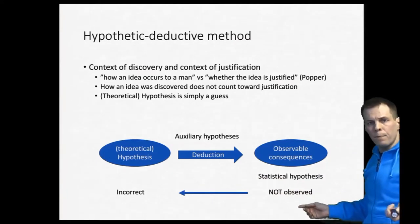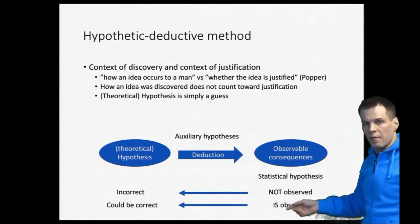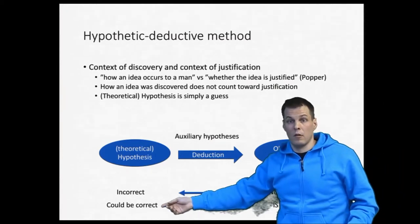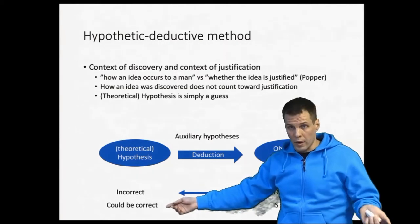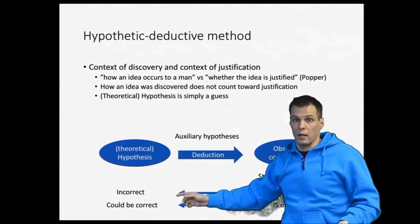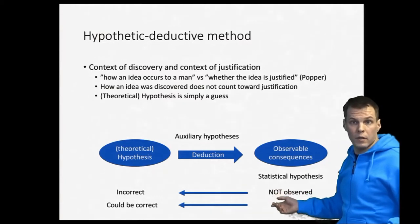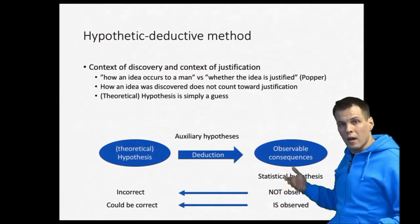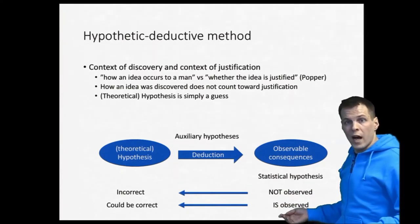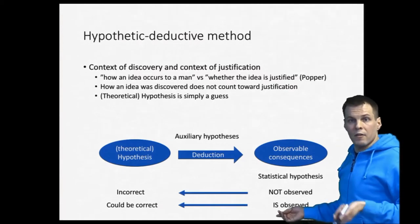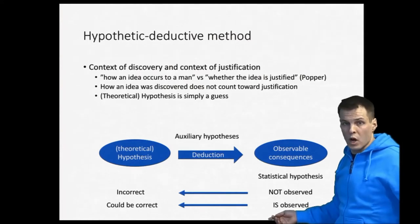On the other hand, if we do observe the deduced consequence of the theory, we can claim the theoretical proposition could be correct. We can't claim it's definitely correct, because deduction doesn't work that way — we can only refute theories, not conclusively support them. The way support for a theory accumulates is when it has been tested over and over again and has survived many severe tests — then we can say it is probably true.